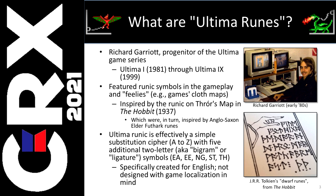In his Ultima games, he used runic symbols in both the gameplay you encountered and the feelies — things that came with the game, like the cloth maps. These symbols were inspired by J.R.R. Tolkien's The Hobbit, so you might be familiar with those dwarf runes from those books as well. It's effectively a simple substitution cipher. All the letters A through Z are mapped to a particular glyph. But there are additional two-letter symbols — I'll be calling them bigrams or ligatures — single symbols for EE, EA, NG, ST, and TH. That's a total of 31 symbols. So if you had the word 'the,' that would not be shown as a three-letter word, but as a two-letter word: the TH symbol and the E symbol.